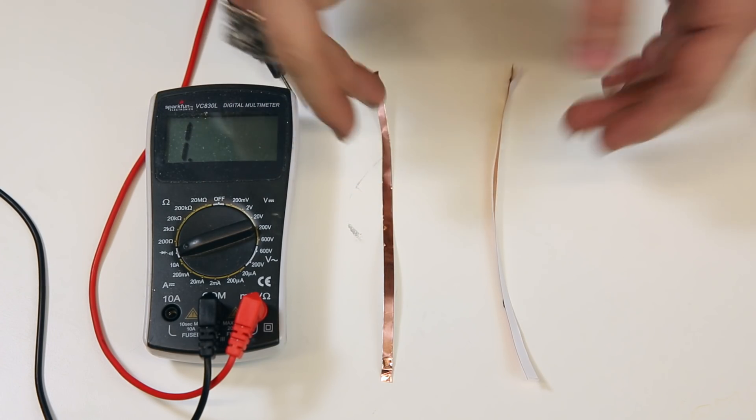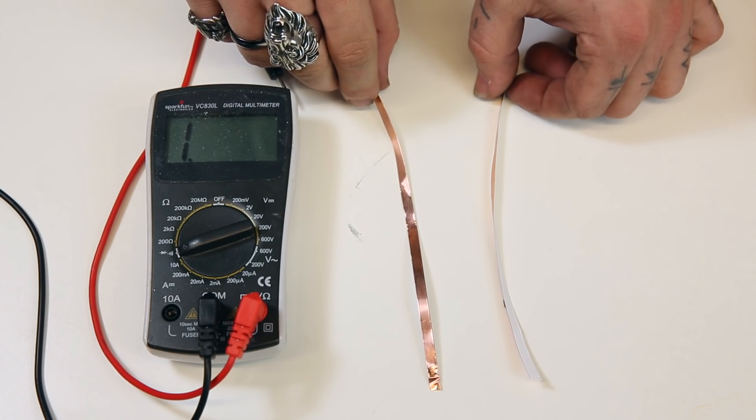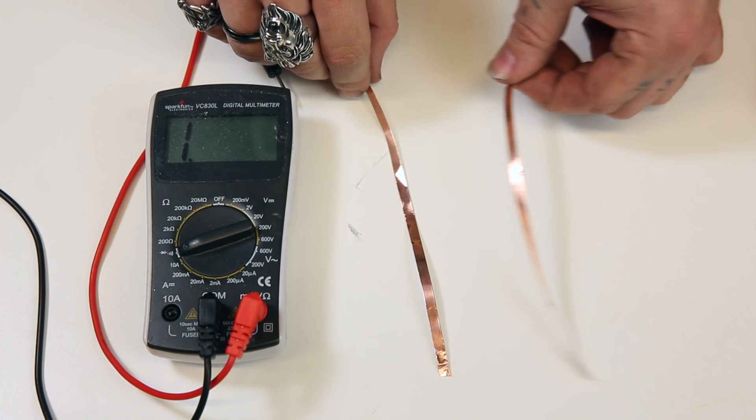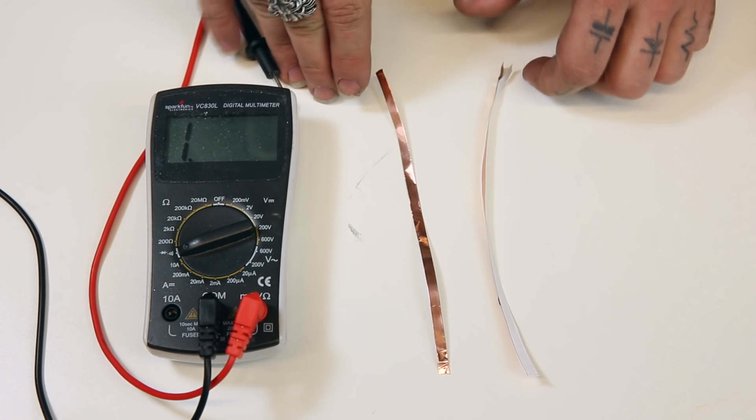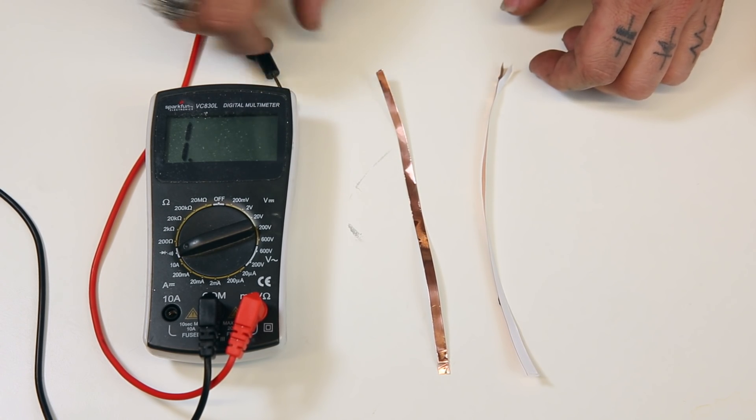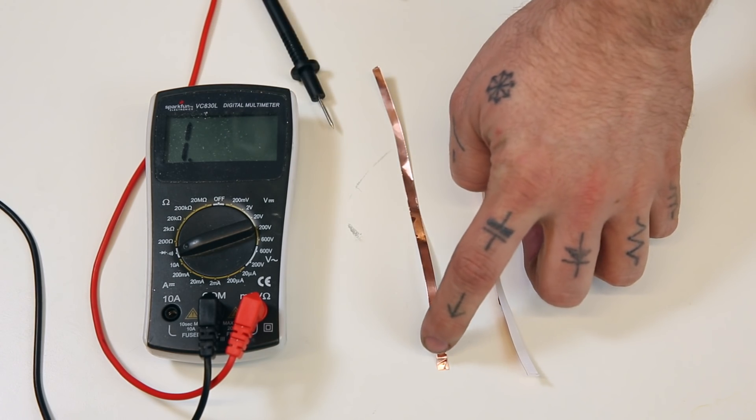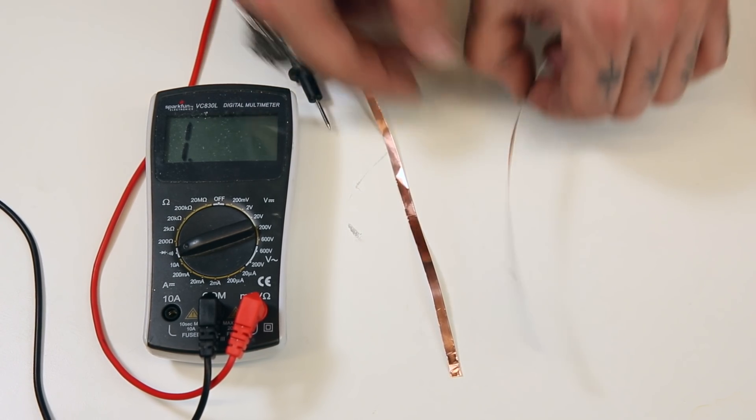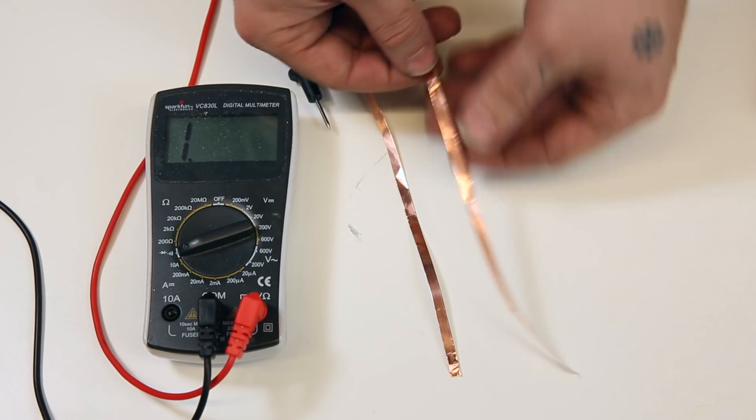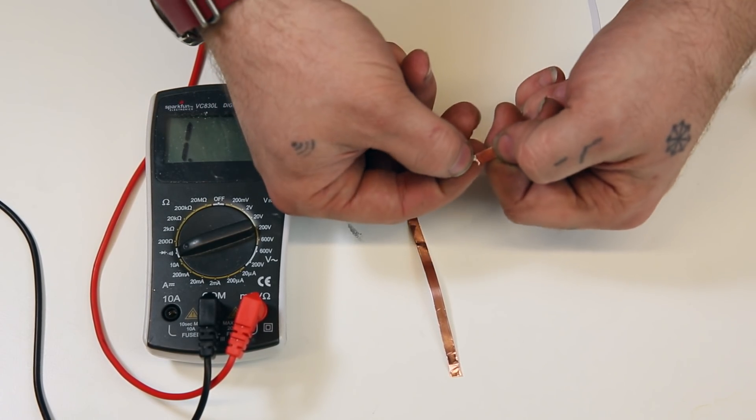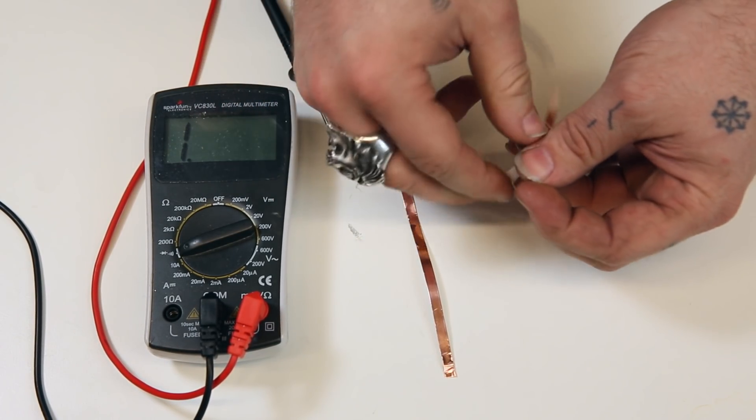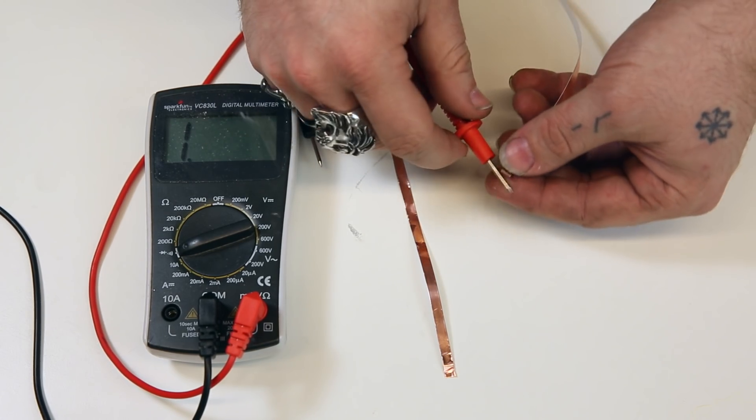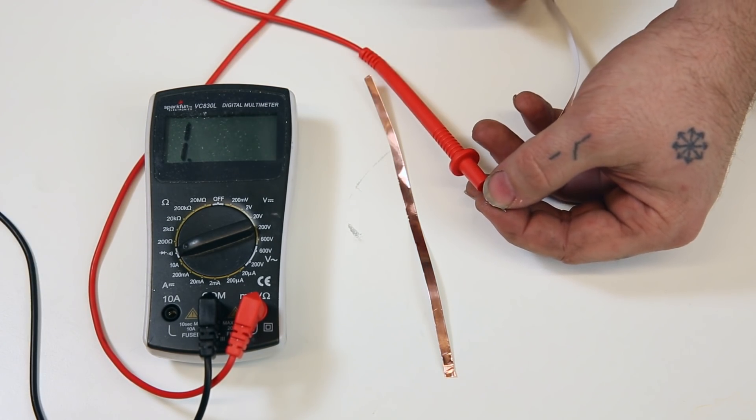To demonstrate what's different about this new copper tape, I've taken a piece of the new copper tape and the old copper tape, and I'm going to test the resistance by putting one probe on the adhesive side and one probe on the bare copper side. First we'll take a piece of the old tape, and I'll just strip the end of it here.